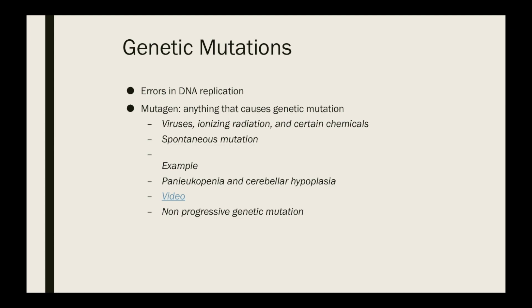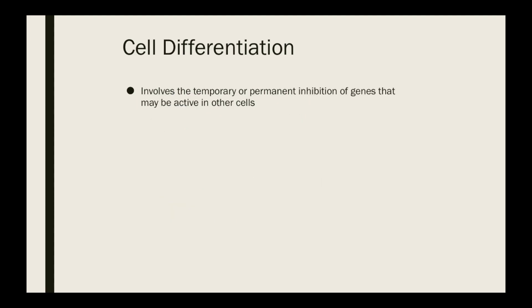Cerebellar hypoplasia is non-progressive — what they have by a year of age is what they'll have for the rest of their life. We have to be cautious about dangers they could get into, not allowing them exposure to areas where they could hurt themselves. That's typical client education for owners of these kittens. Cell differentiation involves the temporary or permanent inhibition of genes that may be active in other cells so that those genes don't necessarily show up. And that is all for today.